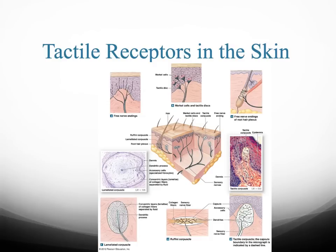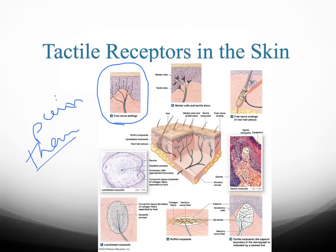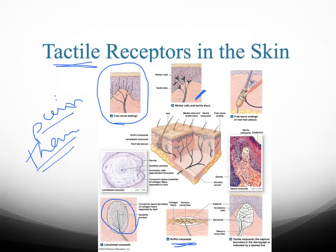Tactile receptors are located on the skin, and there are several different types. Free nerve endings relate not only to pain and thermal sensation but also to touch. Merkel cells were discussed when we talked about the epidermis, and Pacinian receptors were discussed in relation to pressure. The Ruffini corpuscle is located in muscle fibers — any distortion of these nerves gives you the sensation of tactile stimulation.